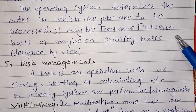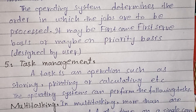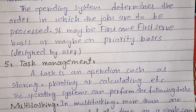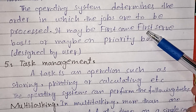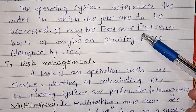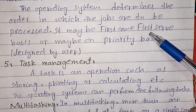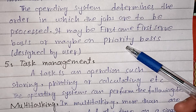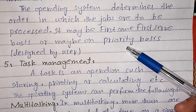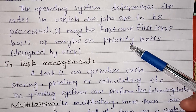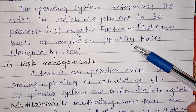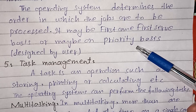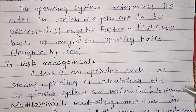Job scheduling may be on a first-come-first-serve basis, or on a priority basis designed by the user. Since we use multitasking and run different programs, the operating system decides which program runs first. With priority basis, the program given the highest priority is executed first, then the second priority, and so on.